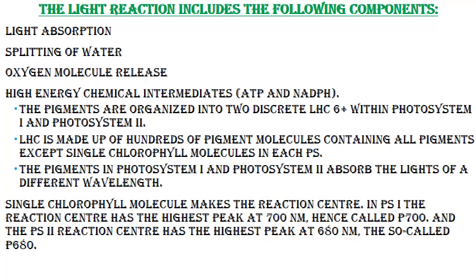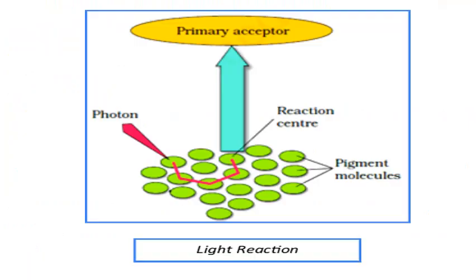The pigments are organized into two discrete light-harvesting complexes within photosystem 1 and photosystem 2. The light-harvesting complex is made up of hundreds of pigment molecules containing all pigments except a single chlorophyll molecule in each photosystem. The pigments in photosystem 1 and photosystem 2 absorb light of different wavelengths. A single chlorophyll molecule makes the reaction center. In PS1, the reaction center has the highest peak at 700 nm, hence called P700. The PS2 reaction center has the highest peak at 680 nm, so called P680. This is the light reaction flow chart showing the primary acceptor, proton, reaction center, and pigment molecules.